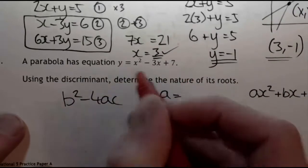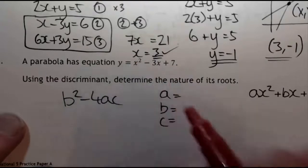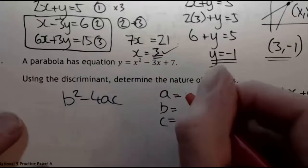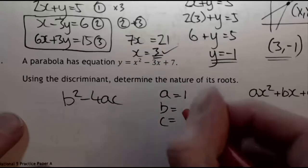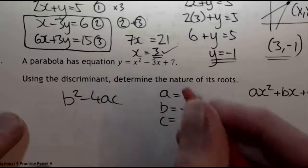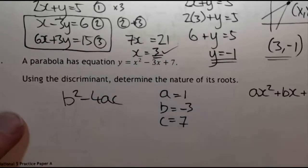So we just look at the equation. x squared is just x squared, so a is 1. Minus 3x, so b is minus 3. And c is just that number there, so that's 7.